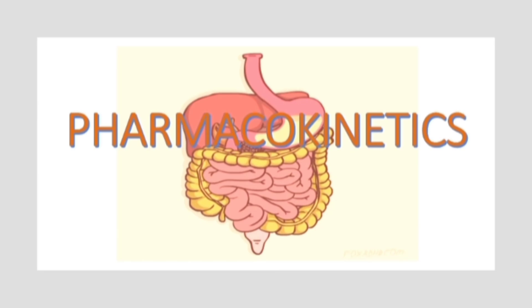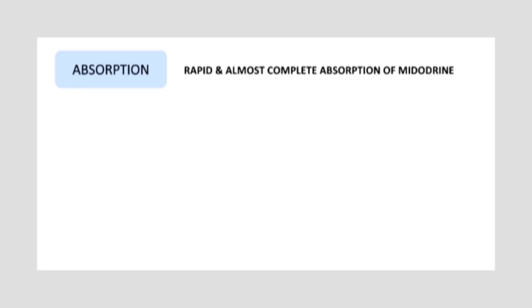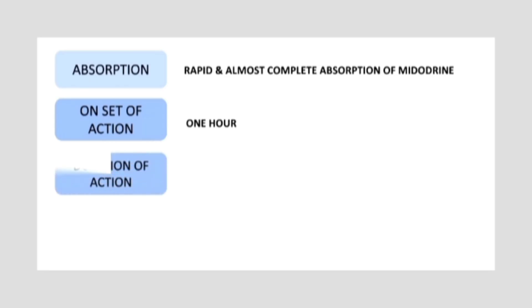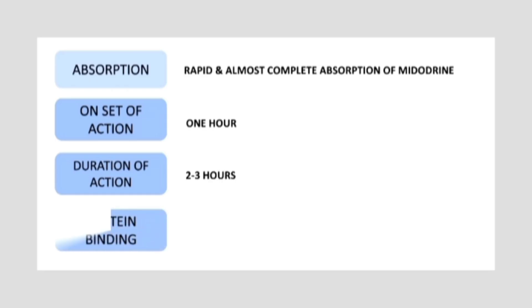Let's move to the pharmacokinetics of the drug. Starting with absorption: midodrine shows rapid absorption via the gastrointestinal tract. That is why it is given as a prodrug, because its active metabolite desglymidodrine shows poor absorption via the GI tract. Its onset of action is quite rapid at 1 hour, whereas the duration of action is 2 to 3 hours. Protein binding is very minimal — less than 30% — which means most of the drug exists in free form, explaining its rapid action.